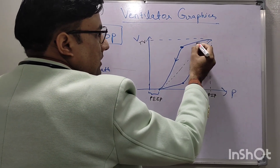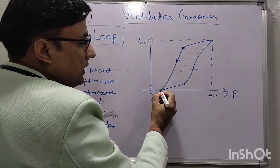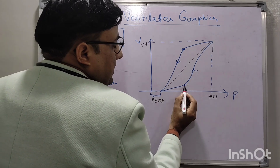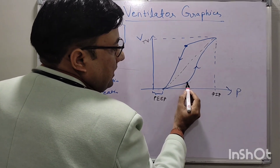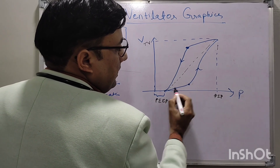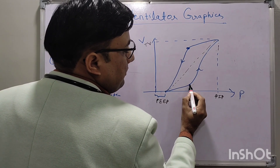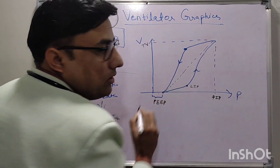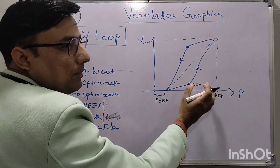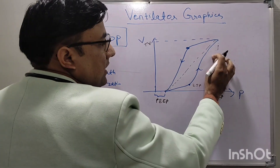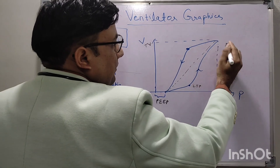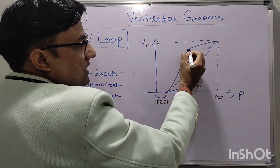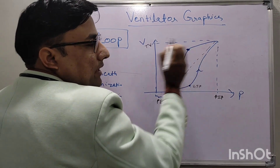After reaching peak volume, we go to expiration and return to the same PEEP point. We can observe that after a certain point, the increase in volume becomes very rapid with increasing pressure. Before this point, volume was increasing slowly; after this point there is rapid increase in volume. This is called the lower inflection point. After this point, FRC is optimum, compliance is improved, and that is why volume increases rapidly.